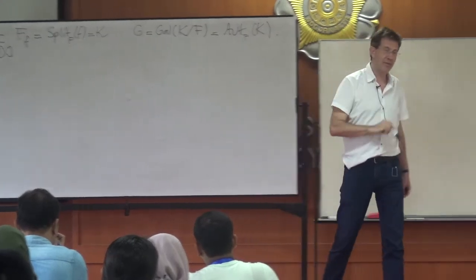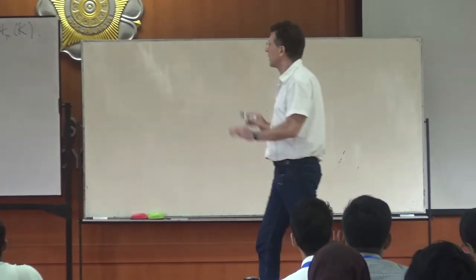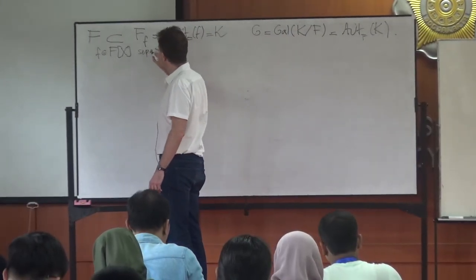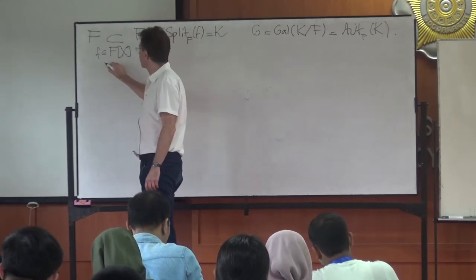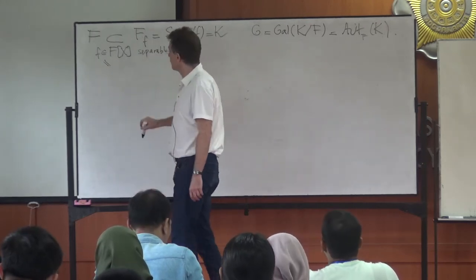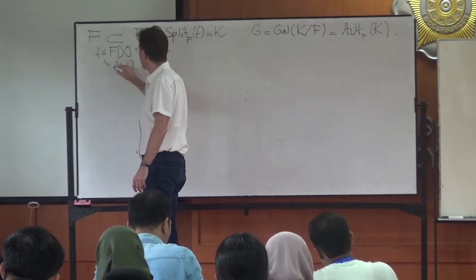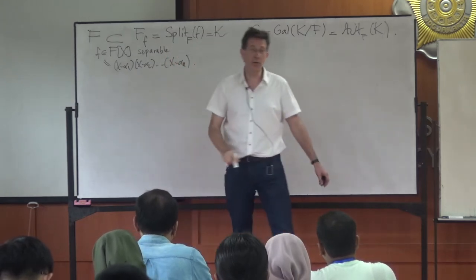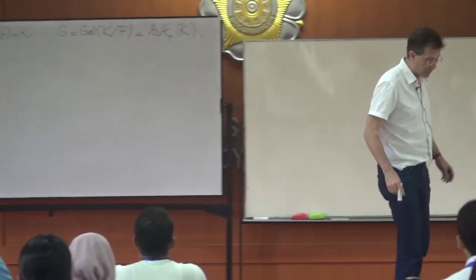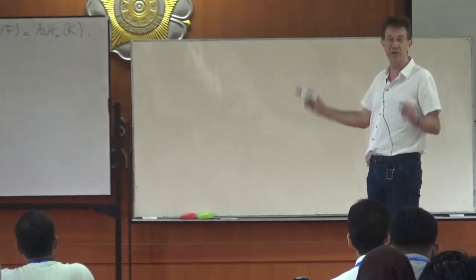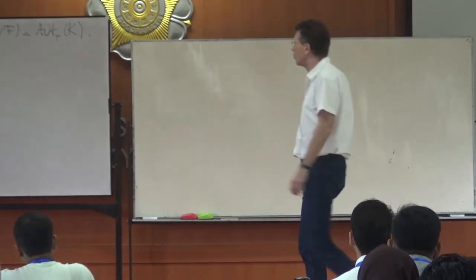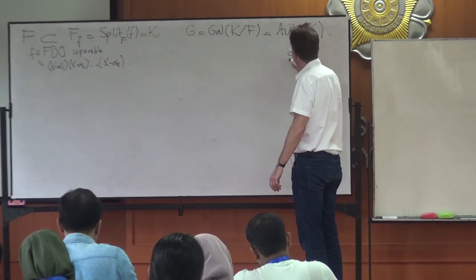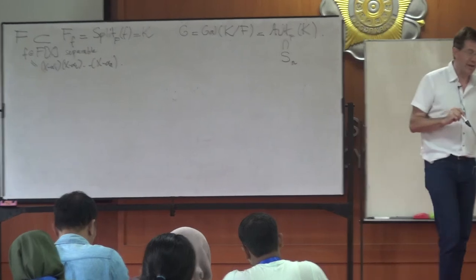It's a very abstract definition. What you try to do usually is get a concrete field by looking at f. If f is separable, you can factor it in the splitting field — it has n distinct roots if n is the degree. This abstract Galois group is then a permutation group on the roots, and it's in general a subgroup of S_n permuting the roots α₁ to α_n.